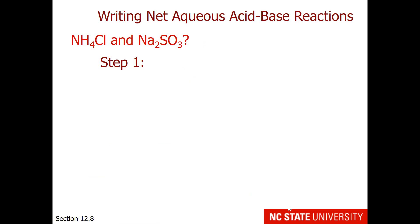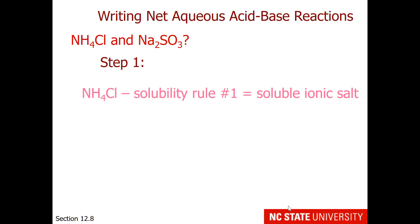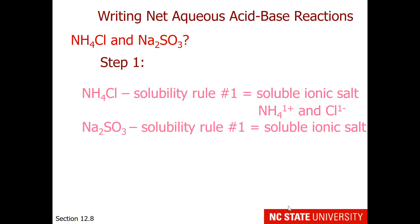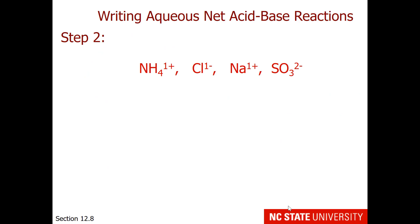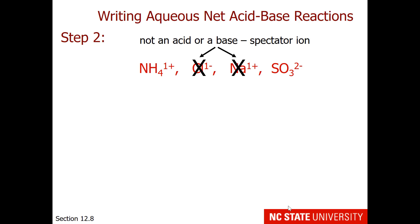Let's try another one: ammonium chloride and sodium sulfite. Ammonium chloride is a soluble ionic salt, so we separate it into ammonium ion and chloride ion. Sodium sulfite is also a soluble ionic salt, so we separate it into sodium ion and sulfite ion. There are four species floating in solution. Step 2: sodium ion is not on the acid-base table, and chloride ion will also be a spectator ion. So our acid is ammonium and our base is sulfite.